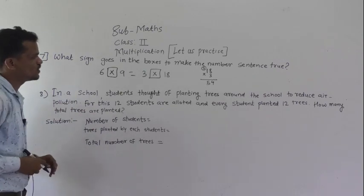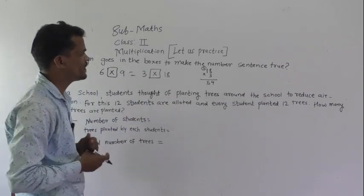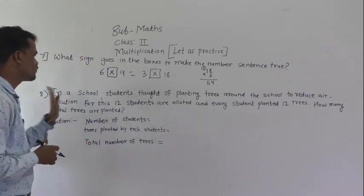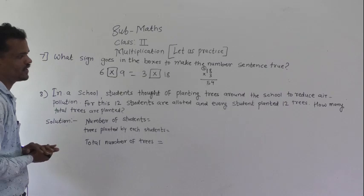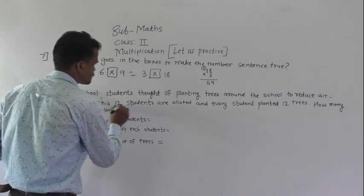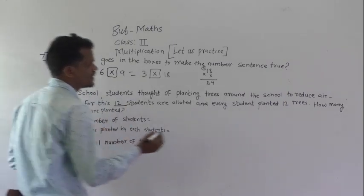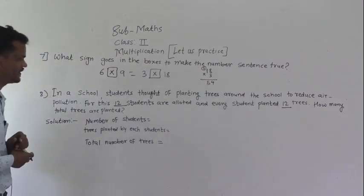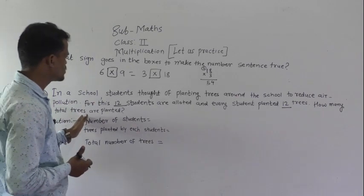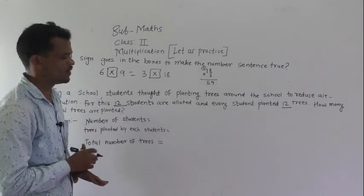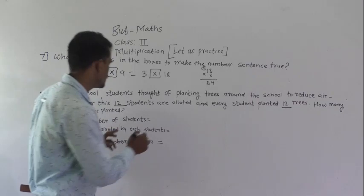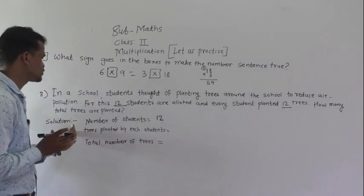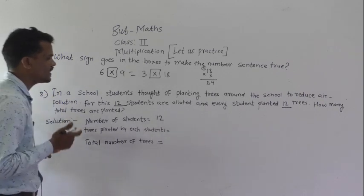Now in a school, students thought of planting trees around the school to reduce air pollution. For this, 12 students are allotted and every student planted 12 trees. How many total trees are planted? Read this question and write the given information. Number of students, how many students are there? 12.